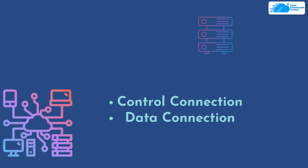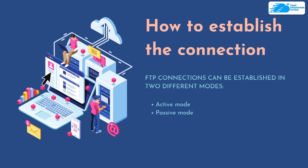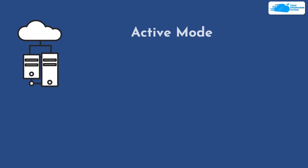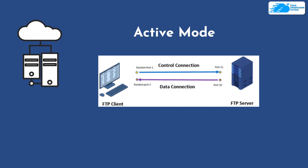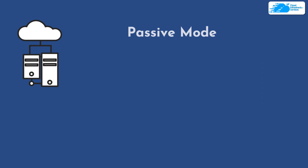There are two modes to establish an FTP connection: active mode and passive mode. In active mode, the user initiates a session using the control channel, connecting from a random port on the client device to port 21 of the server. The client then sends a command specifying the port to which the server should connect back — known as the command port. The server then connects from port 20 to the designated client port, and once the connection is established, file transfer occurs using those two ports.